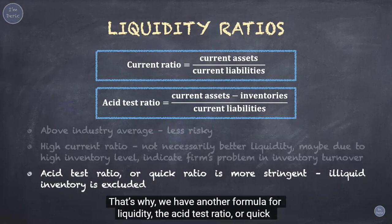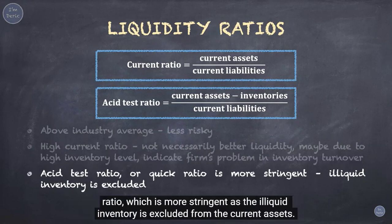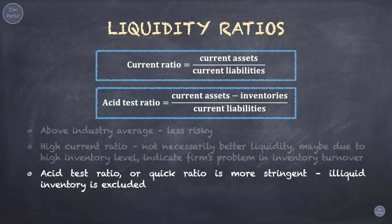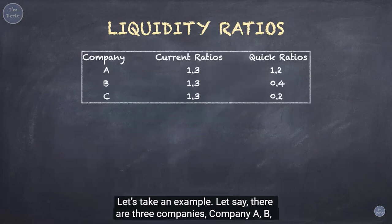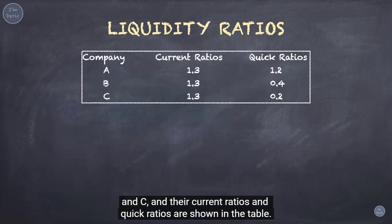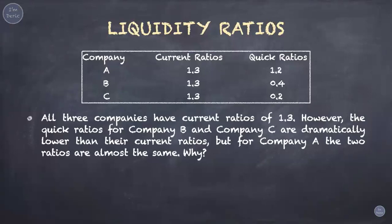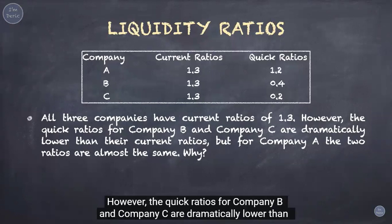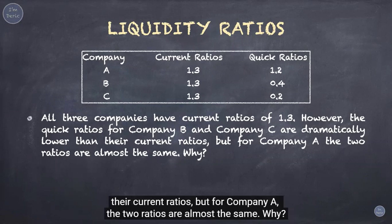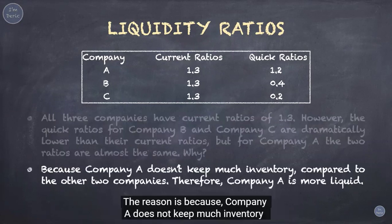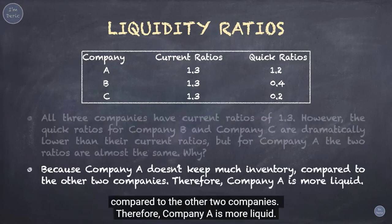That's why we have another formula for liquidity — the acid test ratio or quick ratio — which is more stringent as the illiquid inventory is excluded from current assets. Let's take an example: companies A, B, and C all have current ratios of 1.3. However, the quick ratios for company B and C are dramatically lower than their current ratios, but for company A the two ratios are almost the same. The reason is because company A does not keep much inventory compared to the other two, therefore company A is more liquid.